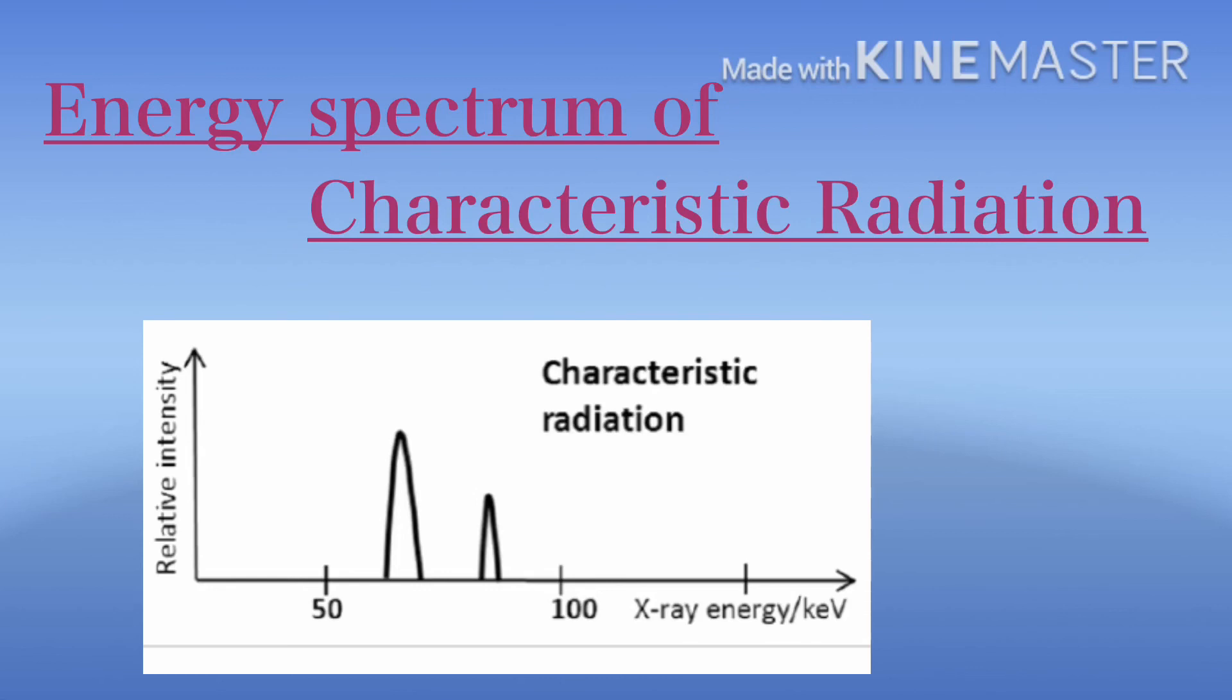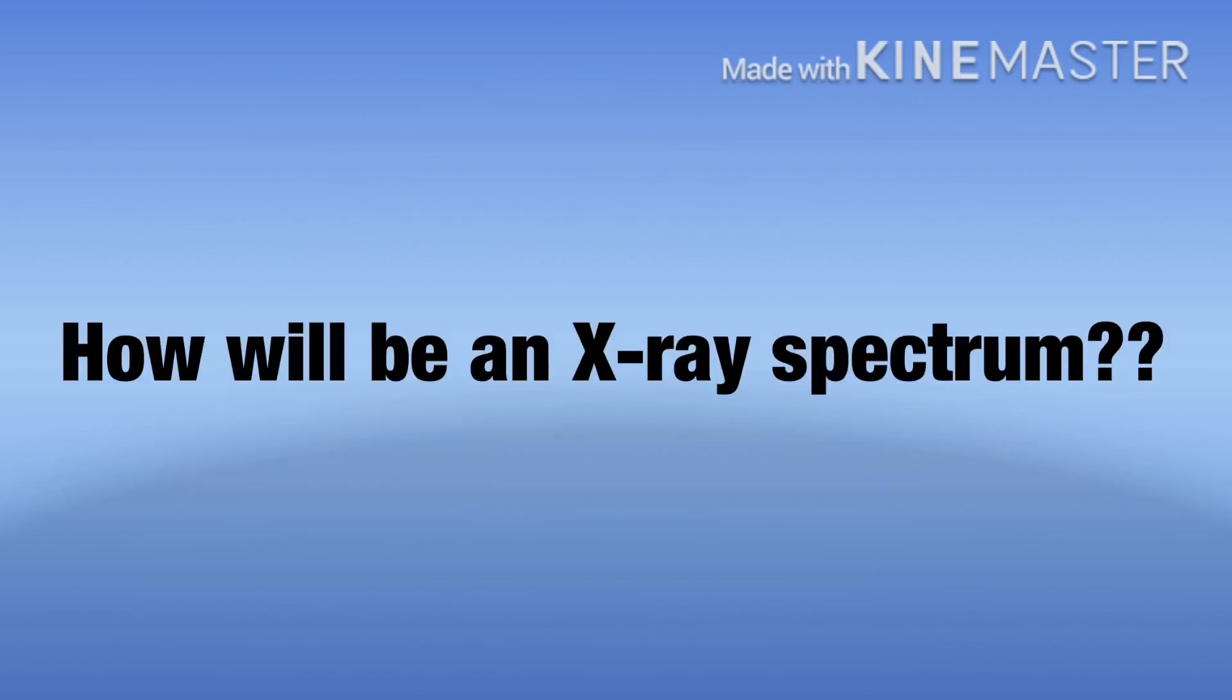For example, electron transition in the case of tungsten anode: electron transition from the L shell to K shell produces X-ray photons of 57.98 and 59.32 keV.